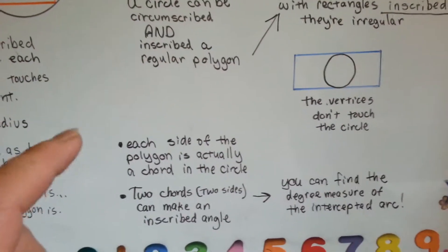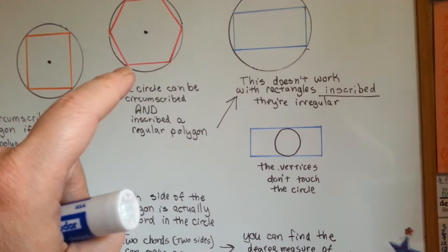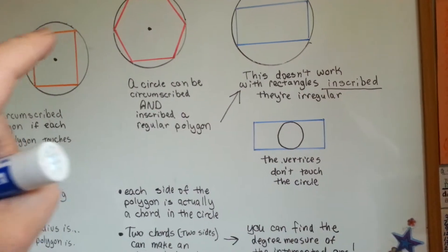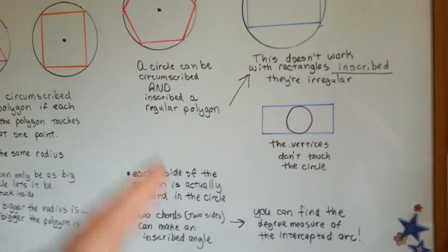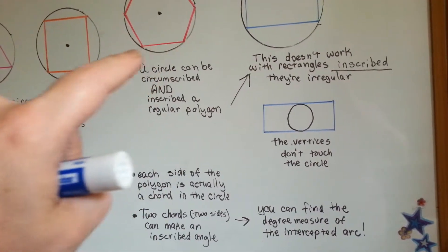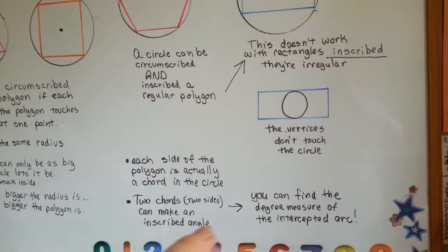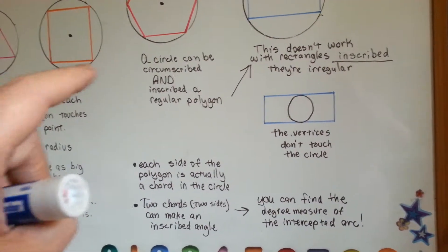Each side of the polygon is actually a chord in the circle. See how it's the chords? Two chords, two sides, can make an inscribed angle. See that? They're making inscribed angles. You can find the degree measure of the intercepted arc with that.